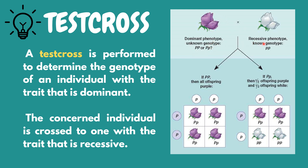Based on the result of the first test cross, the possible genotypes of the offspring are all heterozygous purple. While on the second test cross, the result is half of the offspring are heterozygous purple, while the other half is homozygous recessive white. The given example is a type of monohybrid cross, since there is only one trait that is crossed, which is the color of the flower.